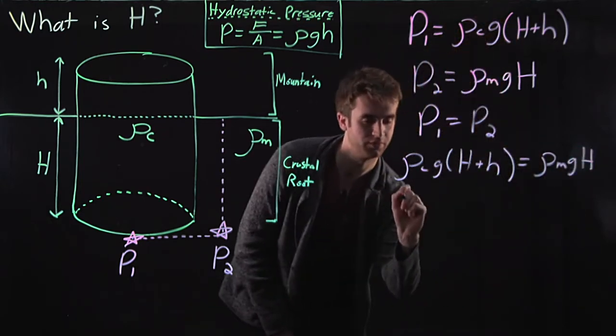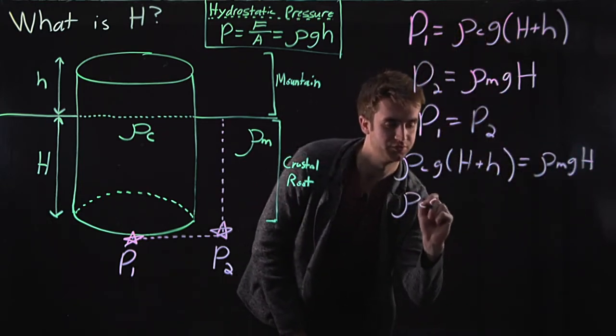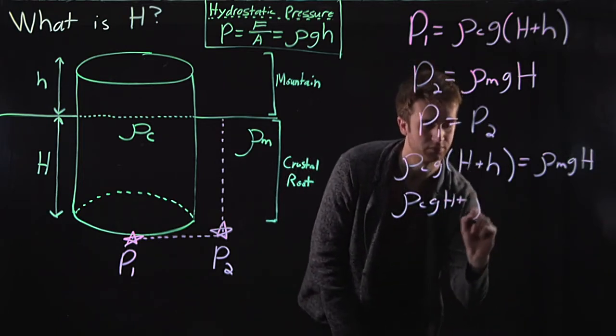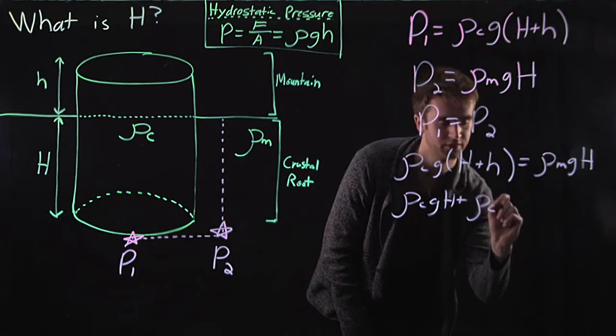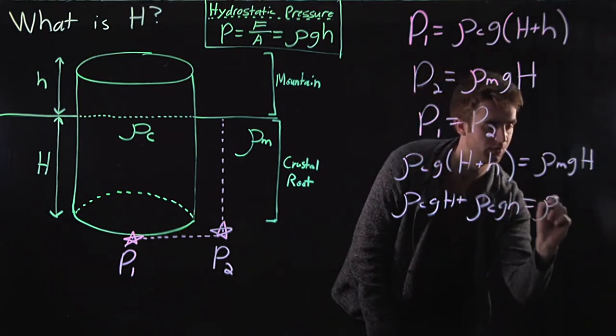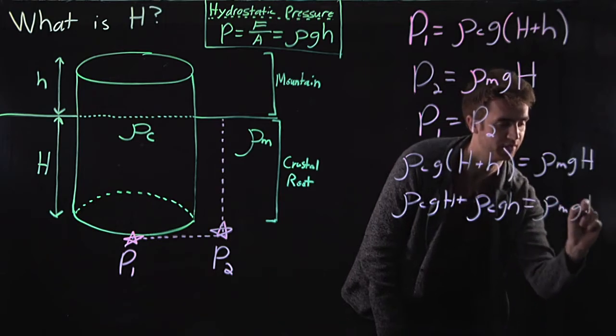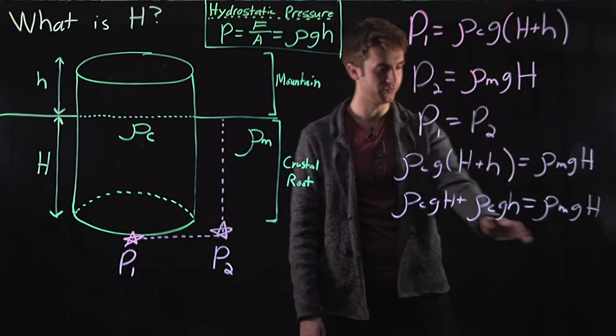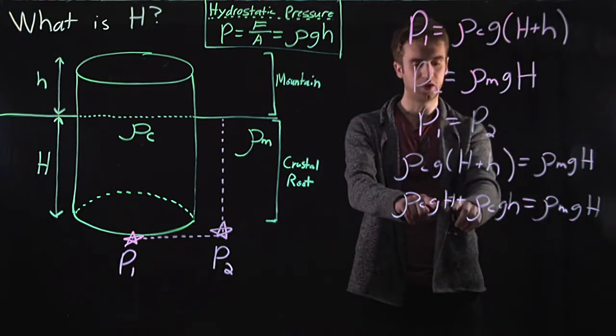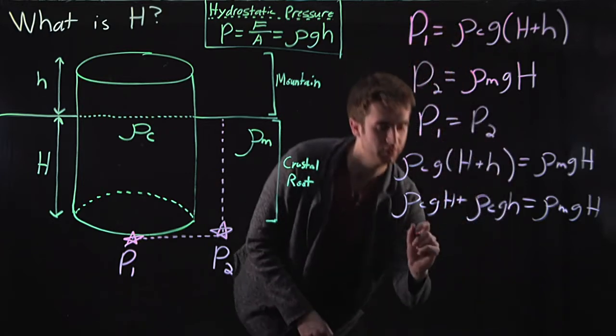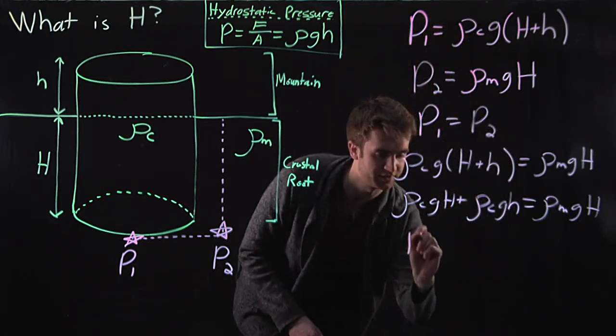Now let's distribute here. So rho c, g, big H plus rho c, g, little h equals rho m, g, H. So I'm going to bring this over here, this over here, and then I'm going to isolate big H on this side of the equation. So just some arithmetic here.